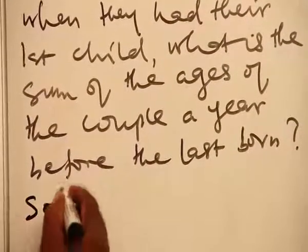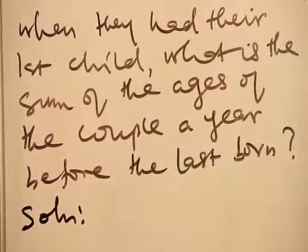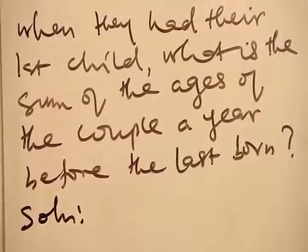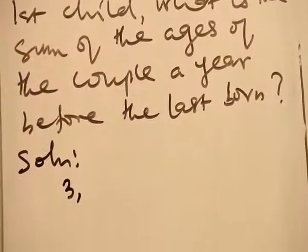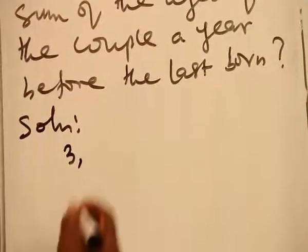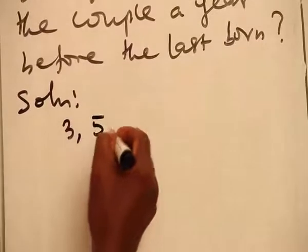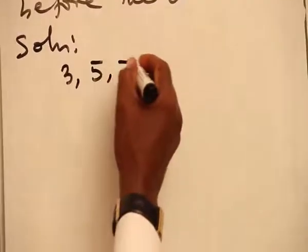Solution. The first child came after 3 years and the next one came 2 years later, so that gives us 5. Another 2 years later, 7.